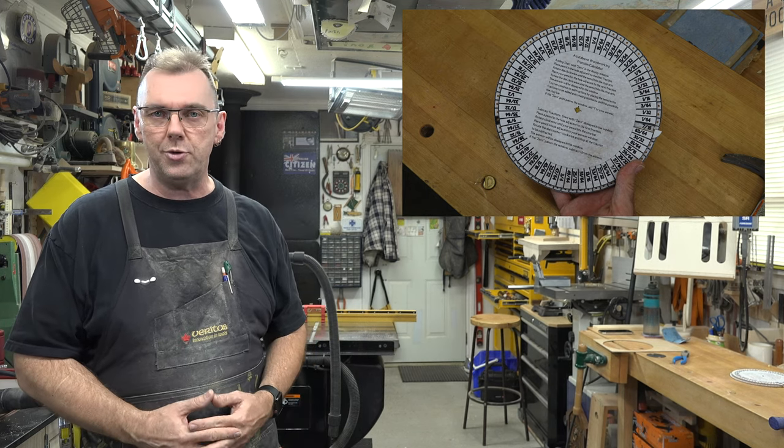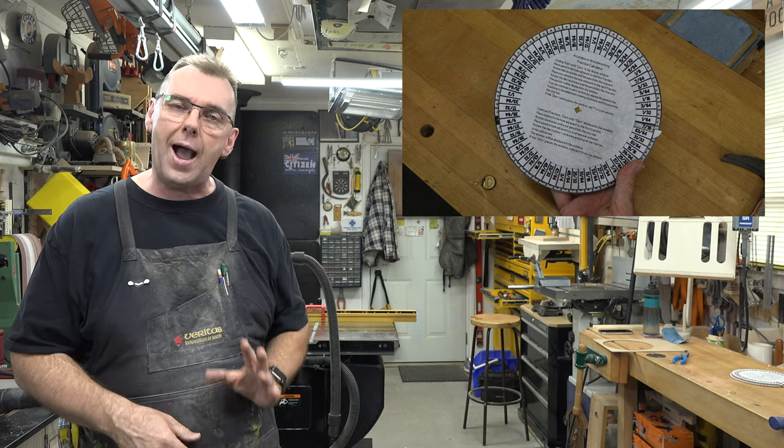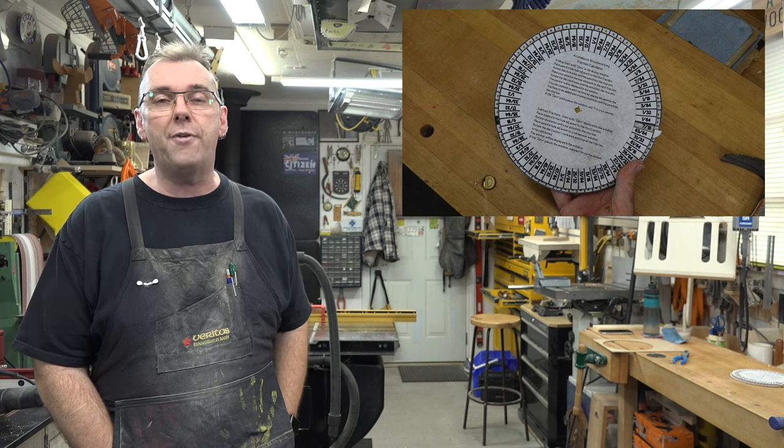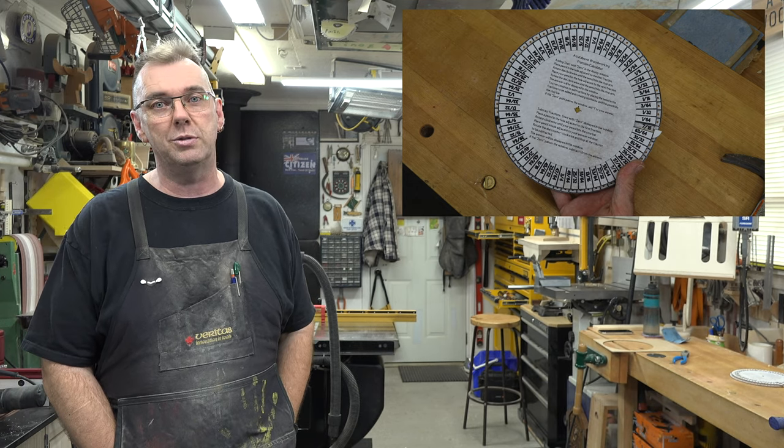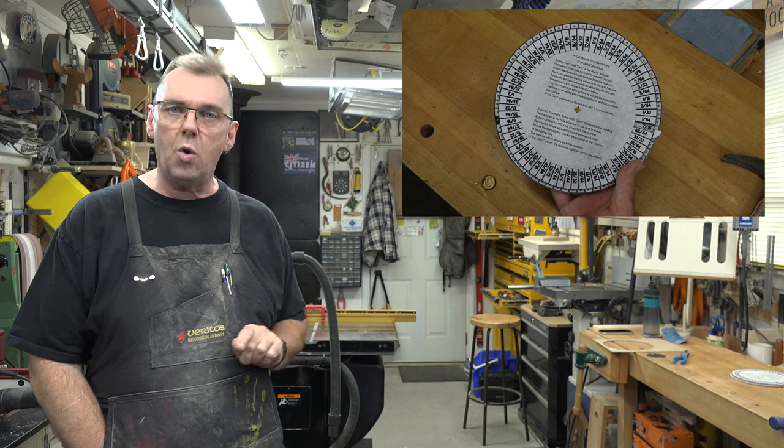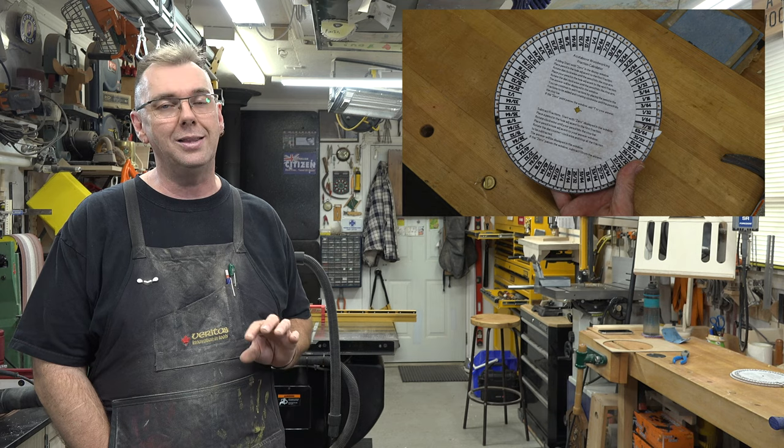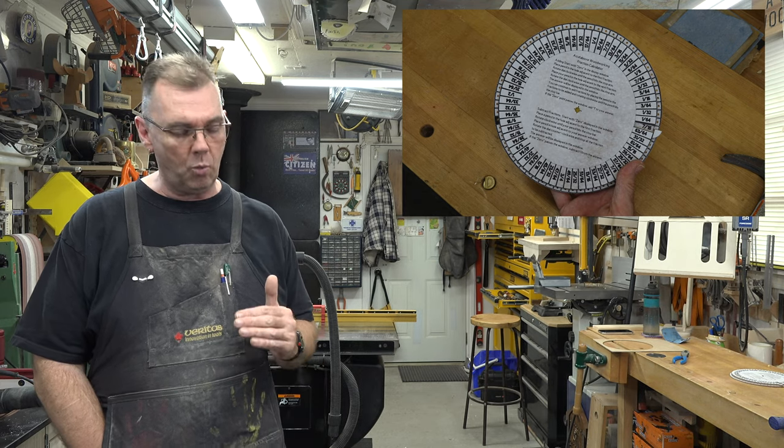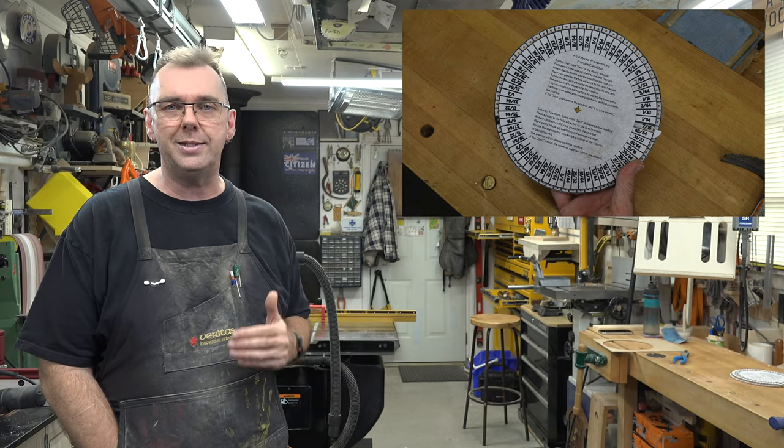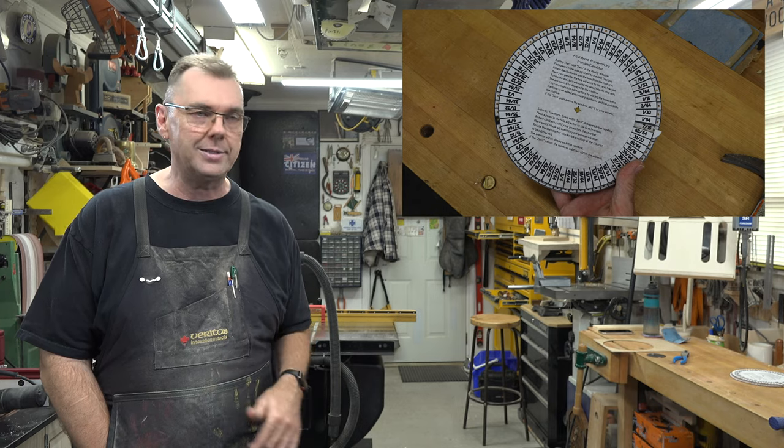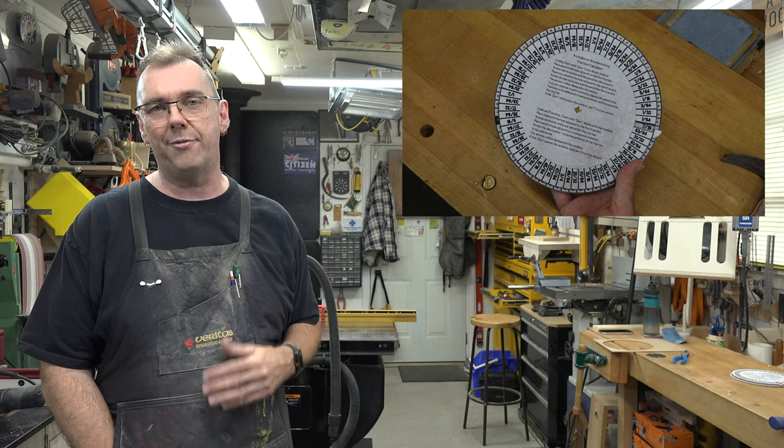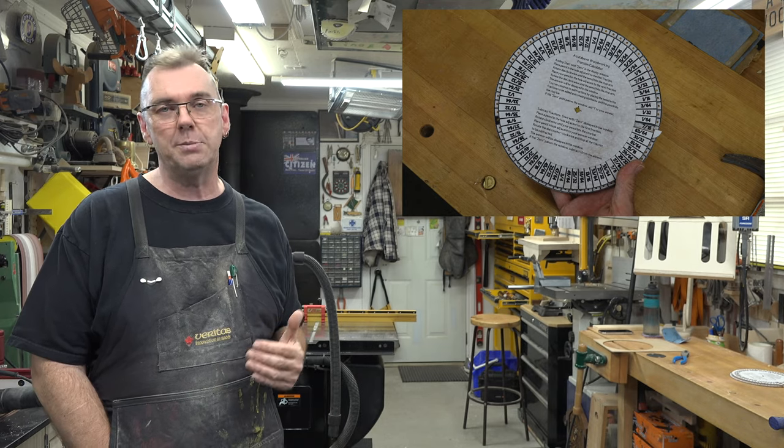Now there are modifications that you can make to this for yourself. I didn't do it on mine, but let's just say that you would find the decimal equivalent of fractions to be useful. That is not a problem. All you need to do is make your window on your top circle a little bigger, and on the bottom circle where that window would be extended, you just need to write in the decimal equivalent to each fraction. That way as it comes around and your answer is displayed in that window, you not only have the fractional value, but the decimal value as well.